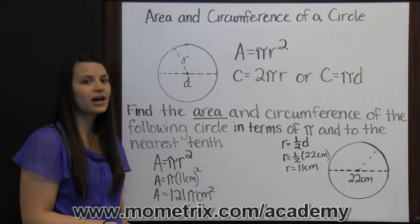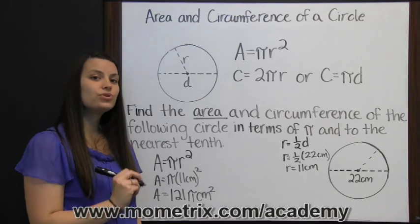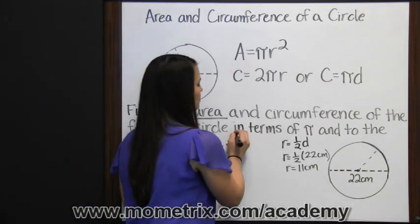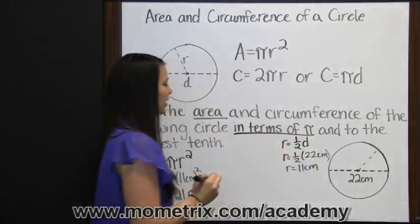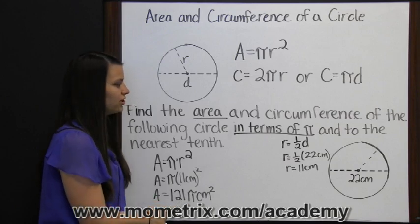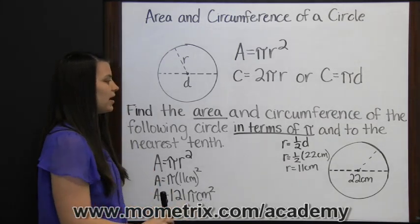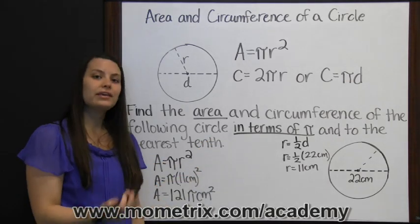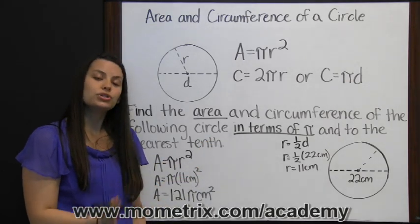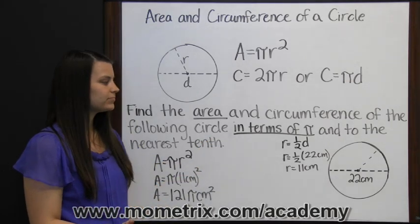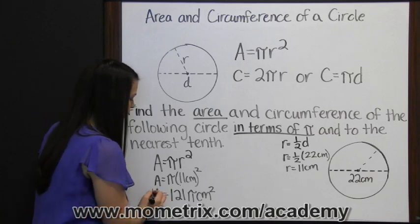They asked us to find our area and circumference in two different ways. The first way was in terms of pi. This answer is the area of our circle in terms of pi, which means leave pi in your answer, or don't multiply times pi. So this would be one of our answers.